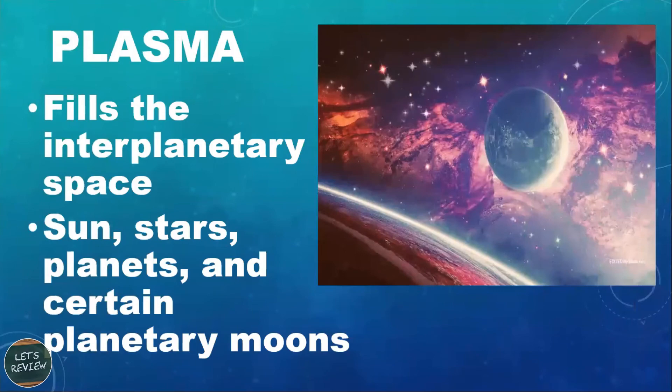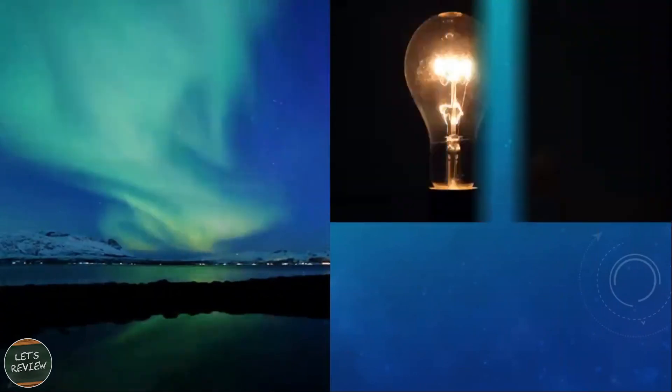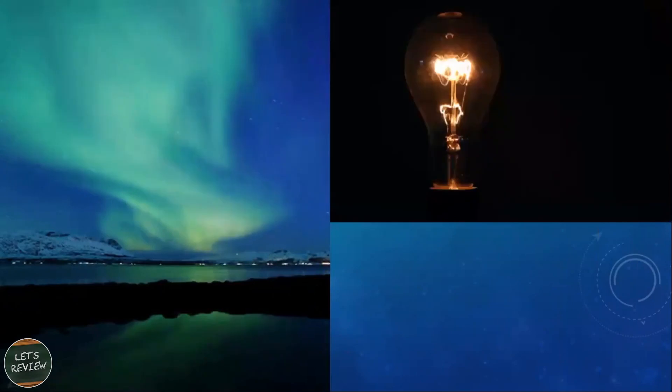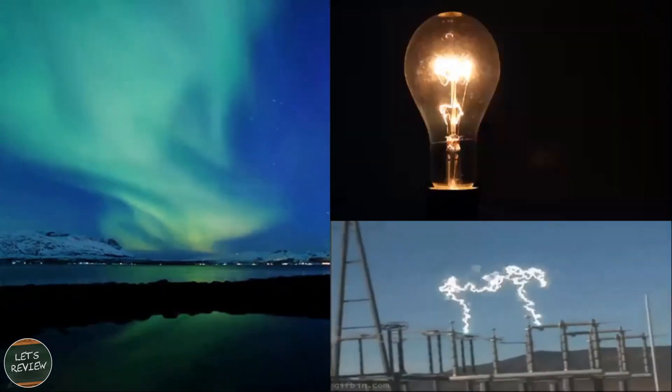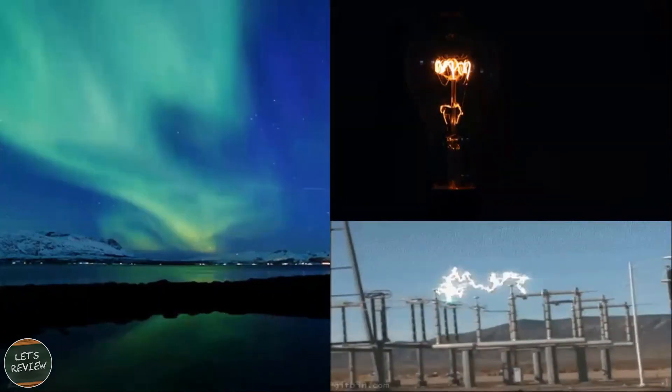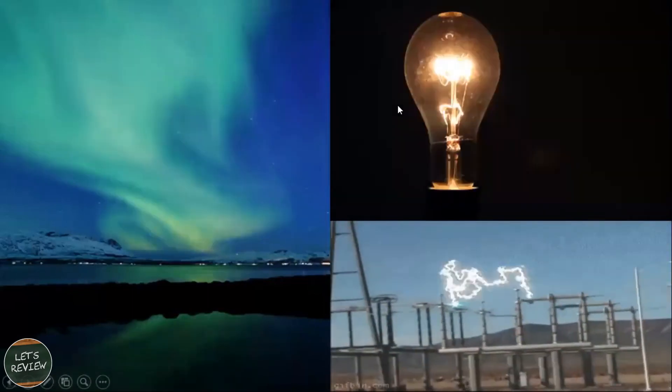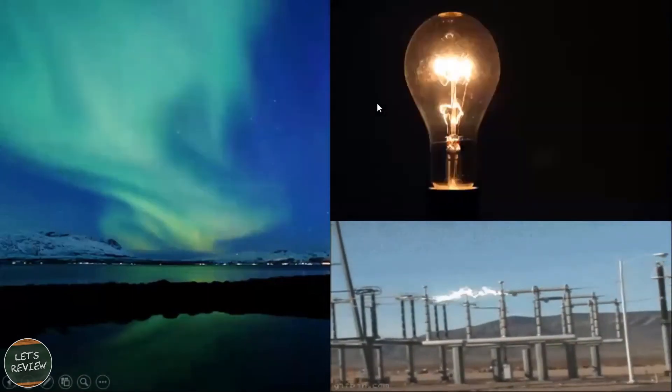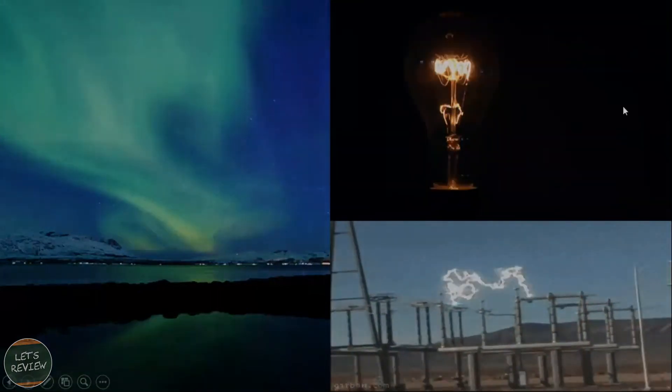And here are my examples. A while ago I showed this to you: the aurora, that light coming from the light bulb, and some sort of electricity like that. So therefore, that's the end of our lesson about the properties of gas and plasma. I hope you learned something from this. Stay tuned for the next topic to review. Bye bye!